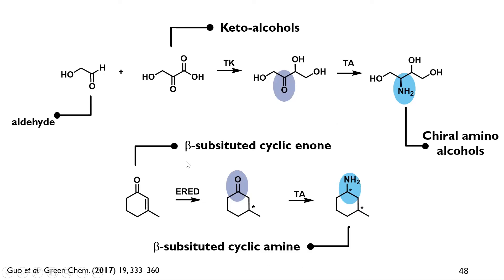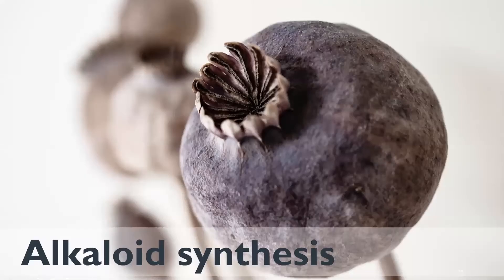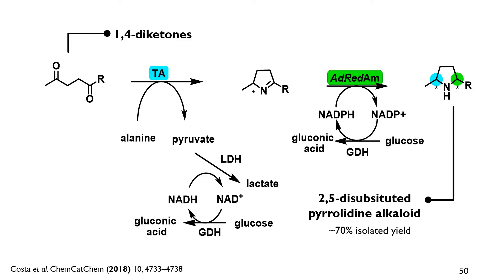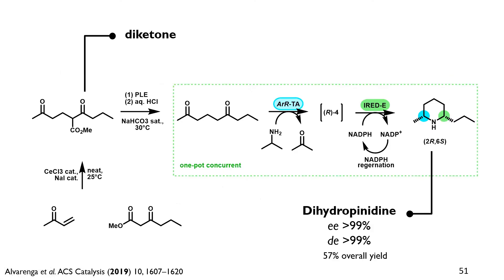There are also ideas for producing two chiral centers with a transketolase or carbon ligation followed by a transaminase reaction. Moreover, beta-substituted cyclic amines were synthesized using an imine reductase together with a transaminase. Especially alkaloid synthesis profits a lot from transaminase cascades — particularly the synthesis of Amaryllidaceae alkaloids by combining a transaminase with a reductive amination using reductive aminases, achieving more than 70% isolated yield with very high enantioselectivities. In this case, lactate dehydrogenase was also used for pyruvate removal and glucose dehydrogenase for cofactor recycling.